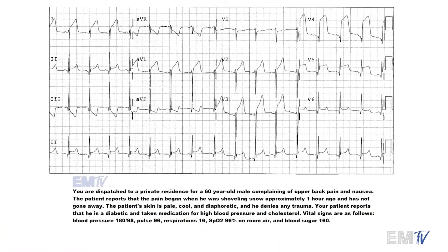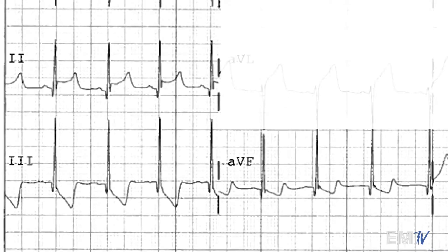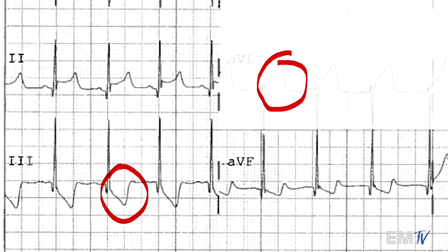The next lead grouping I look at are the inferior ones. I like to look at the inferiors next because they're clumped together in a very easy-to-interpret group. The inferior leads are leads 2, 3, and AVF. I'm only seeing ST segment elevation in one of these leads — lead 2 — and because it's only in one lead of this grouping, I cannot diagnose ST segment elevation in the inferior leads. However, in leads 3 and AVF there's ST segment depression. Specifically, the ST segment depression in lead 3 is a reciprocal change to AVL — an exact opposite shape of the ST segment and T wave present in AVL.